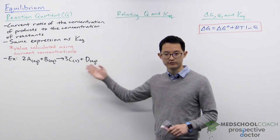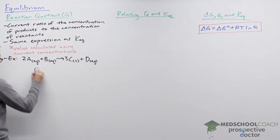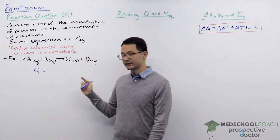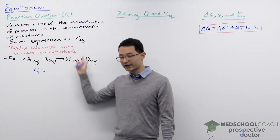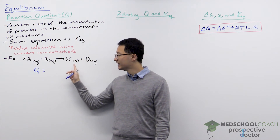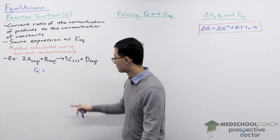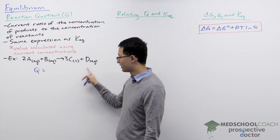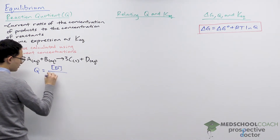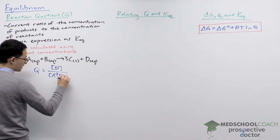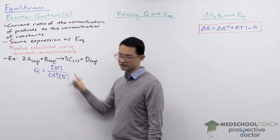As an example, let's write the expression for the reaction quotient Q for this reaction. First, look at the phases: we have aqueous, aqueous, solid, and aqueous. We do not include solids and liquids, so molecule C is excluded. We include molecules A, B, and D, and the stoichiometric coefficients become exponents. This gives us Q = [D] / ([A]² × [B]), where A is squared because its stoichiometric coefficient is 2, while B and D are 1.